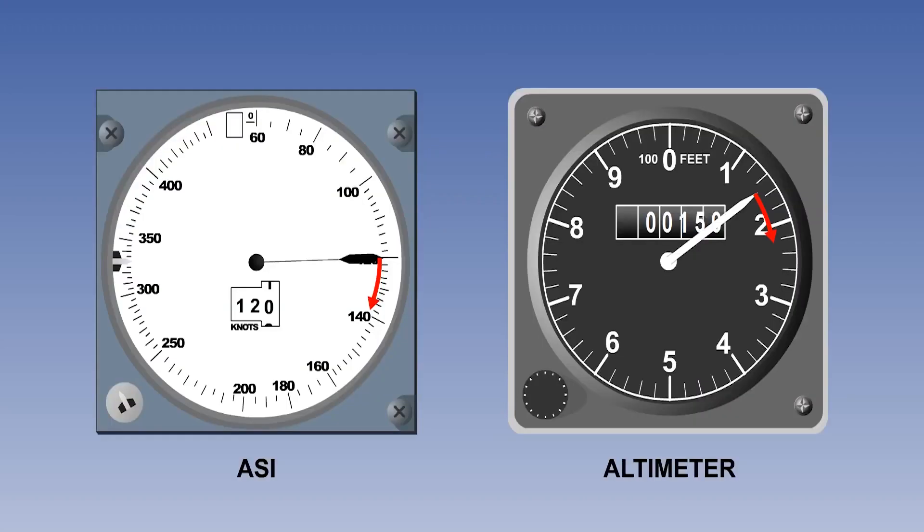The pressure error change, which would occur on entering ground effect, is reversed, with a small local static pressure decrease and a slight increase in ASI and altimeter indications.